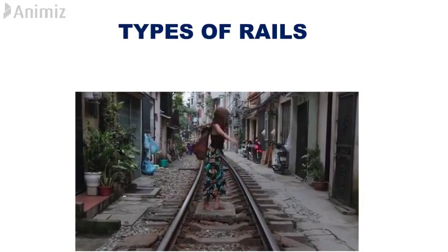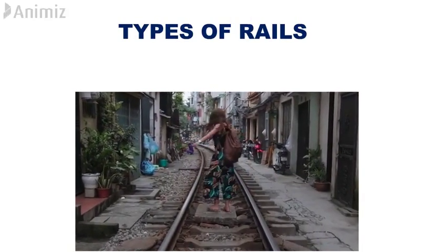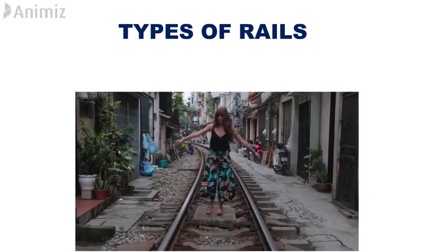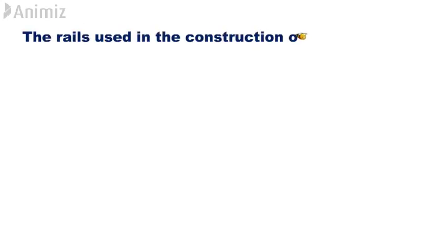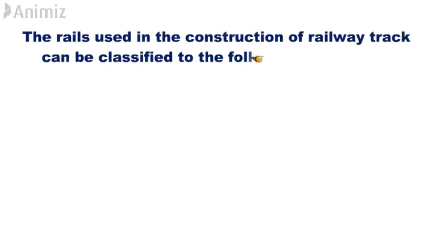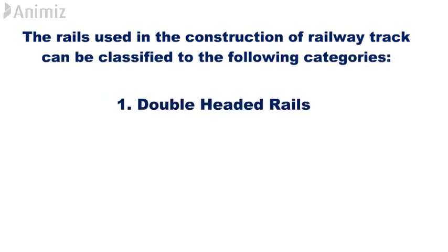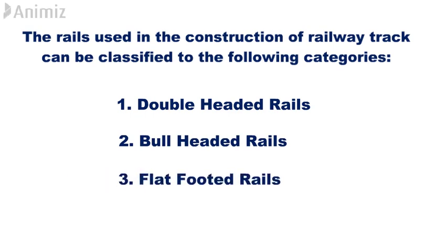Types of Rails. The rails used in the construction of railway track can be classified into the following categories: 1. Double-headed rails, 2. Bull-headed rails, 3. Flat-footed rails.